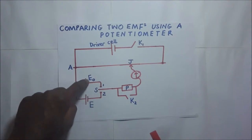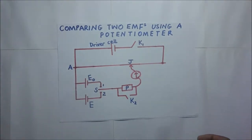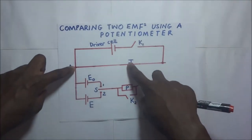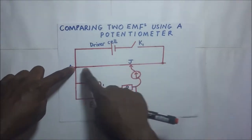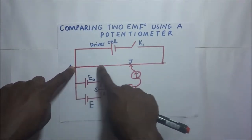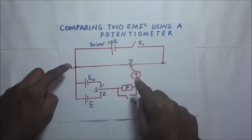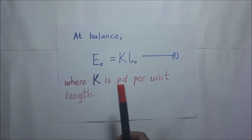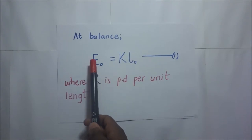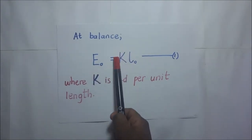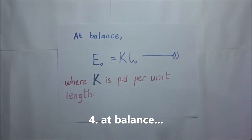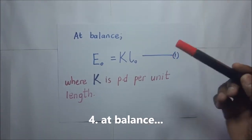When we get the accurate balance point — the point at which the galvanometer is not deflecting — we record the accurate balance length, which we call L0 since it corresponds to E0, the standard cell. We then write our first equation: at balance, E0 is equal to the PD per unit length multiplied by the balance length L0.